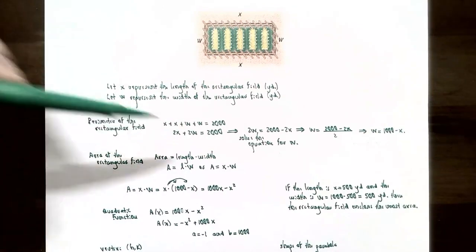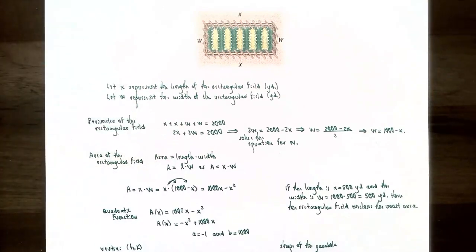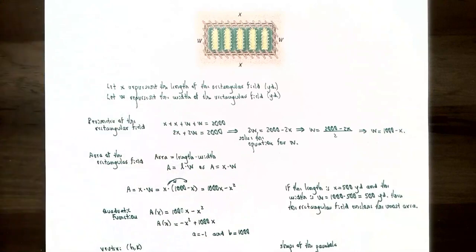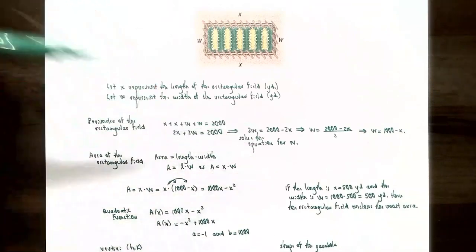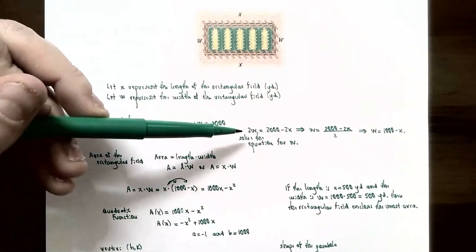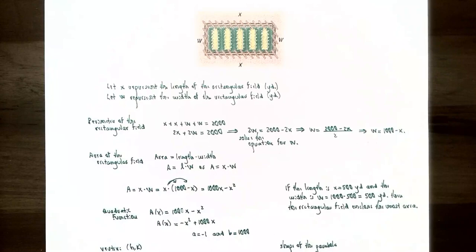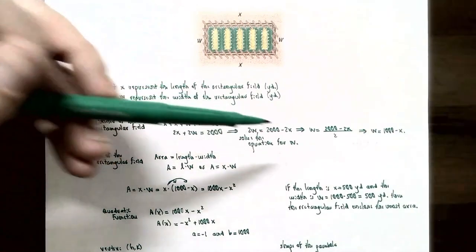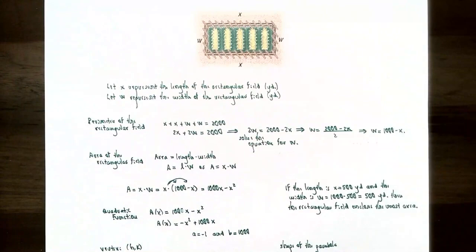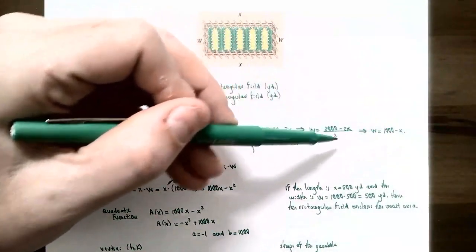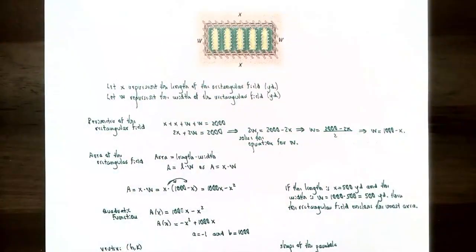Since we have two variables, let's solve for one. Solving for w: subtract 2x from both sides to get 2w = 2000 - 2x, then divide both sides by 2. So w = 1000 - x.